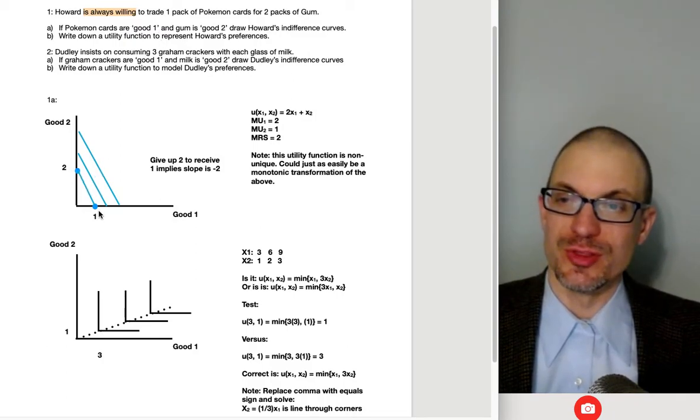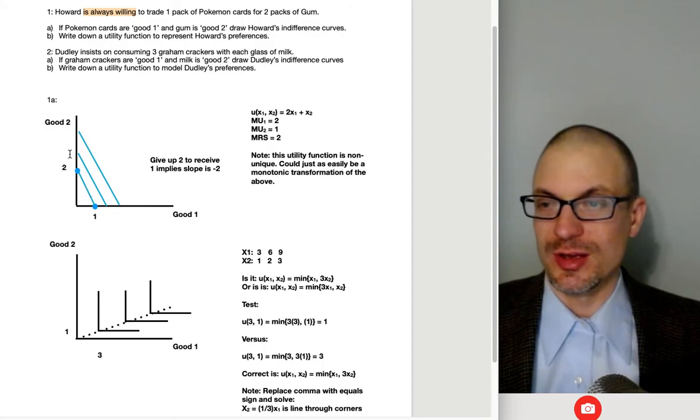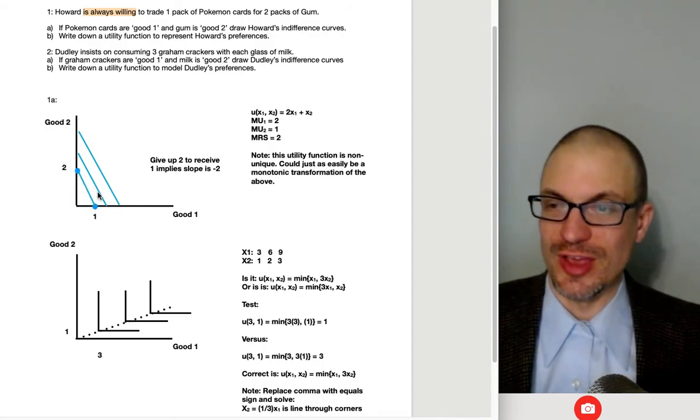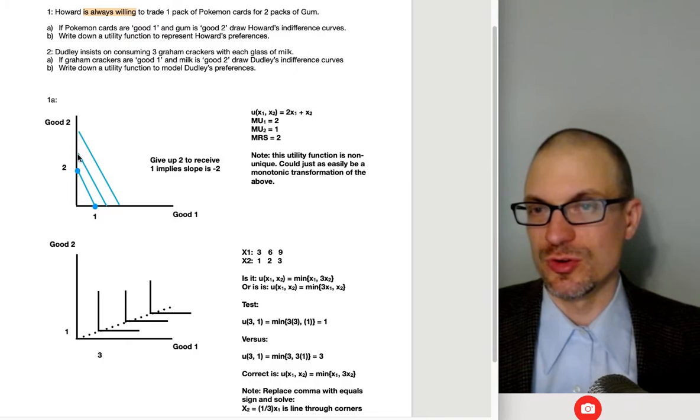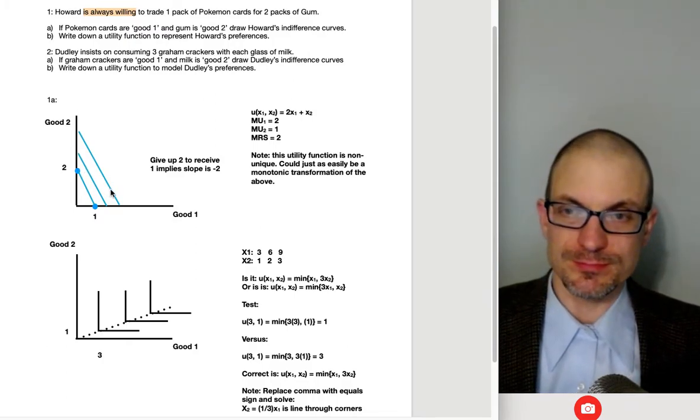And so we represent this with a straight line, you know, constant rate of constant transaction or constant trade off indifference curves.